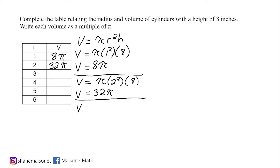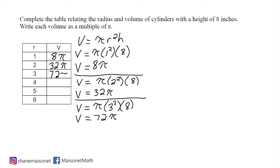The next cylinder has a radius of 3, so we are going to square that radius and multiply by 8. And 3 squared is 9, and 9 times 8 is 72, so 72 pi cubic inches is our volume.